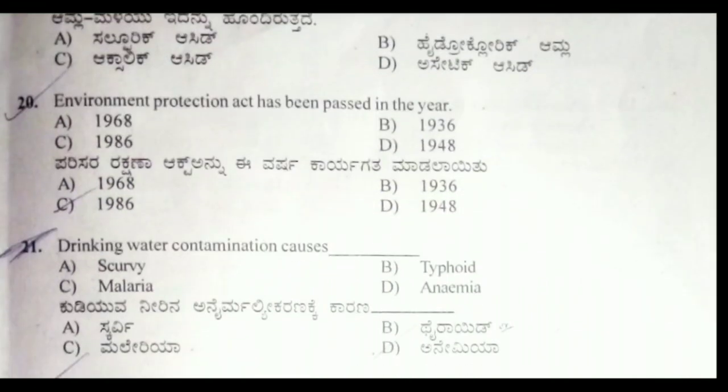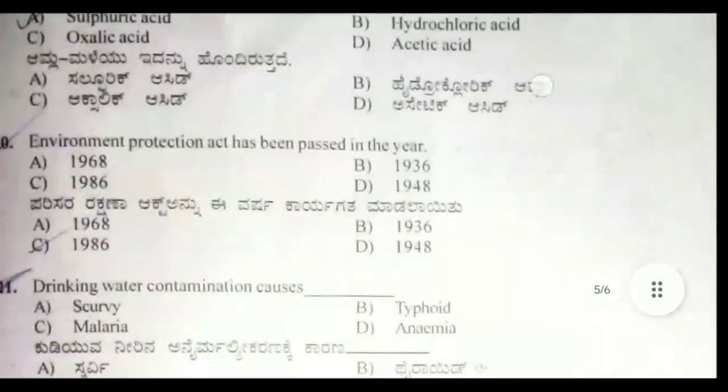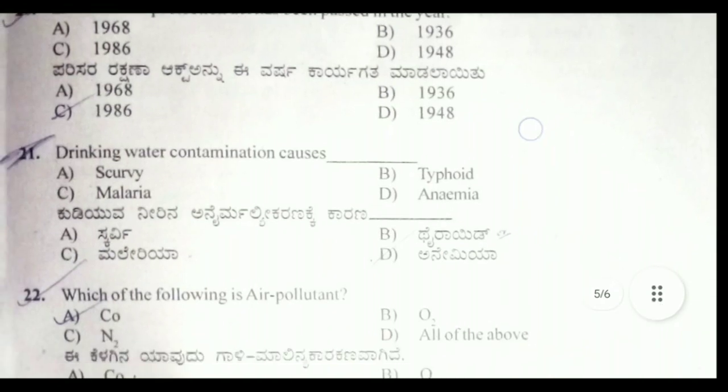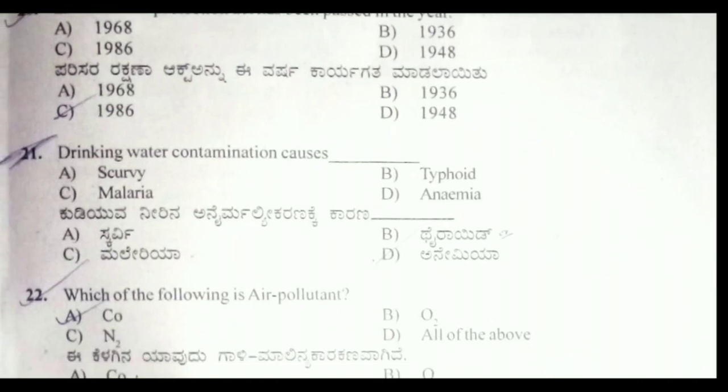Twentieth question: a new environment protection act was passed in the year 1986. Twenty-first question: drinking water contamination causes — the correct answer is option B, typhoid.